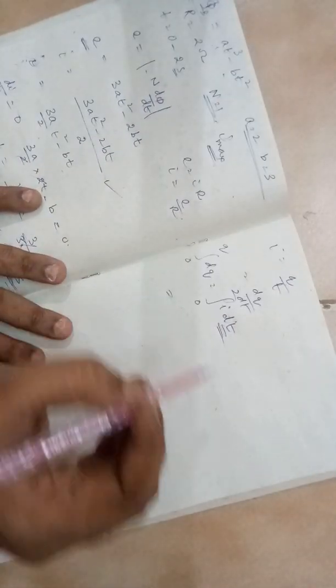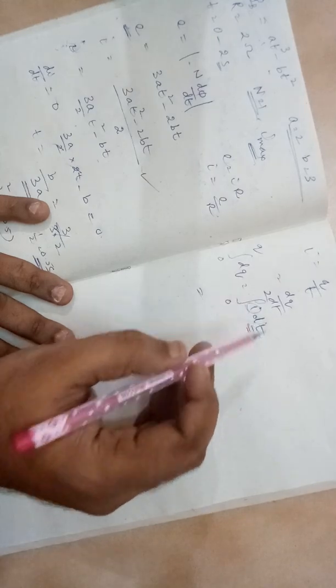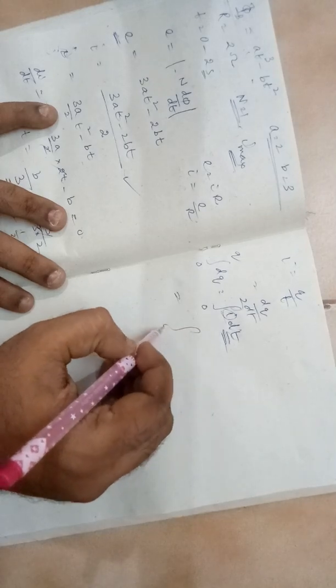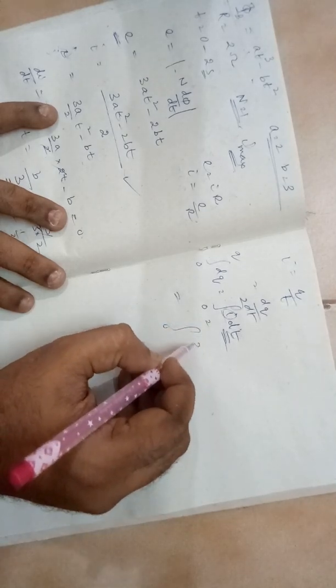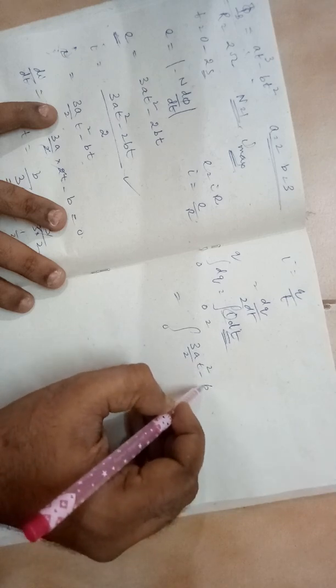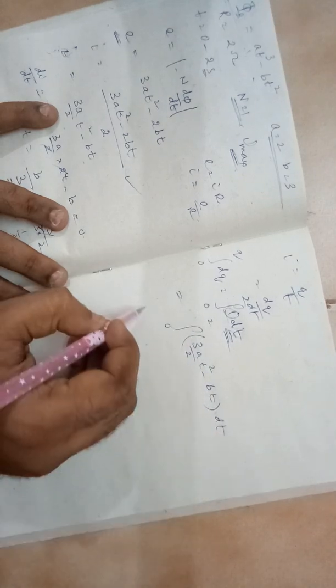I here you need to write as a function of time. We have already written that. It is 0 to 2, 3A by 2, t square minus Bt into DT.